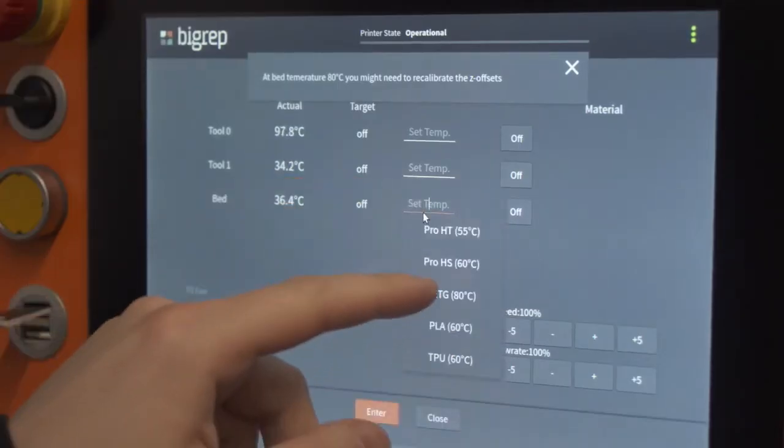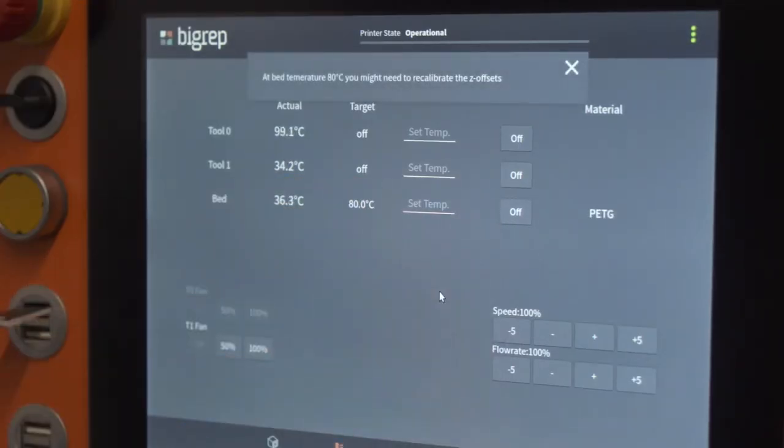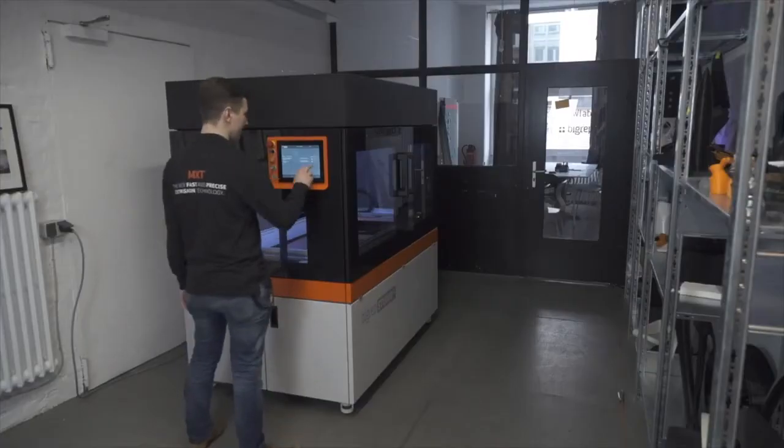The print bed is fast heating, capable of rapidly reaching 100 degrees Celsius for optimal print adhesion and minimal print time.